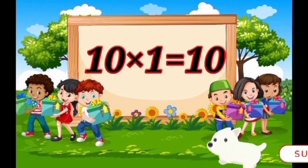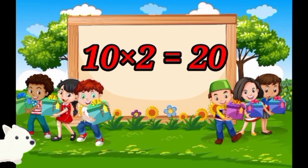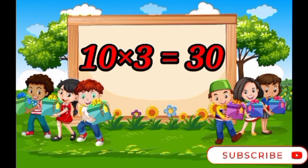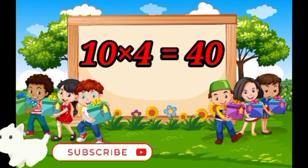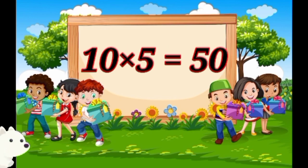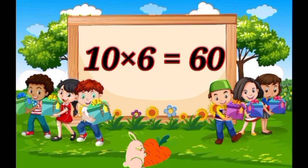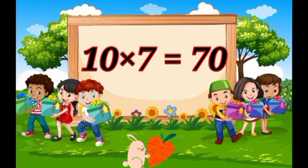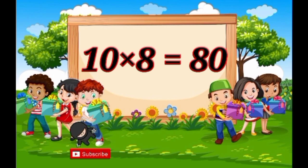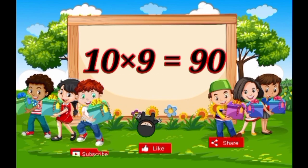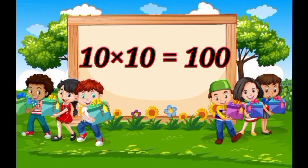Ten ones are ten, ten twos are twenty, ten threes are thirty, ten fours are forty, ten fives are fifty, ten sixes are sixty, ten sixes are forty, ten sevens are seventy, ten eights are eighty, ten nines are ninety, ten tens are a hundred.